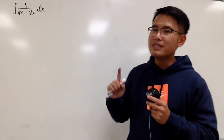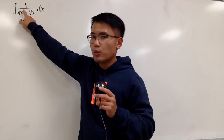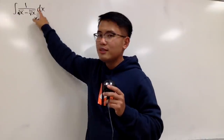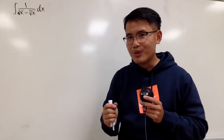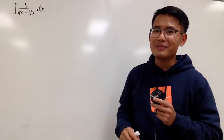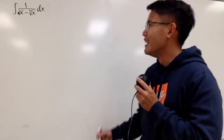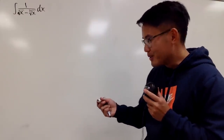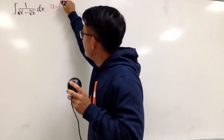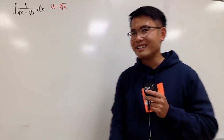So here is a much better strategy. As we know, this is saying x to the 1/2 power, and this is saying x to the 1/3 power. Why don't we look for the lowest common denominator of 1/3 and 1/2? And of course, that will be 6. So what I'm going to do is let u equal to the 6th root of x. And you will see why.